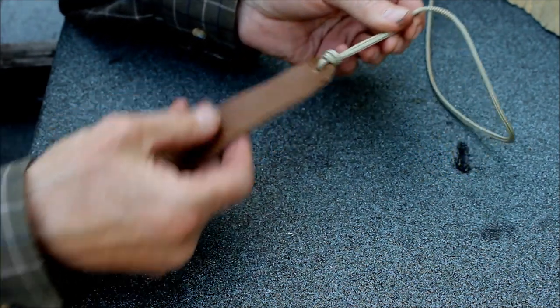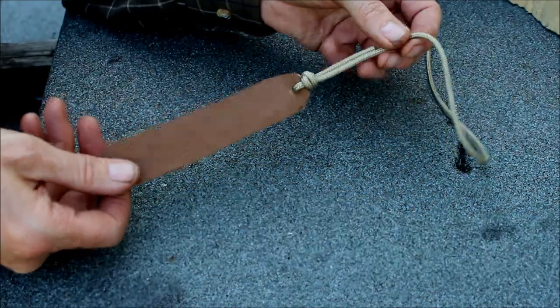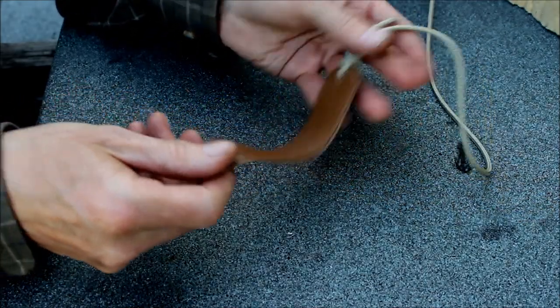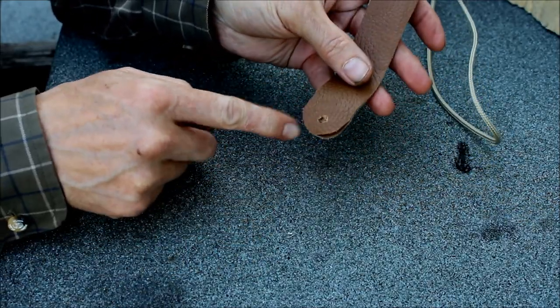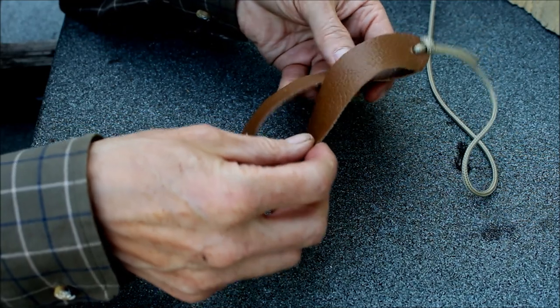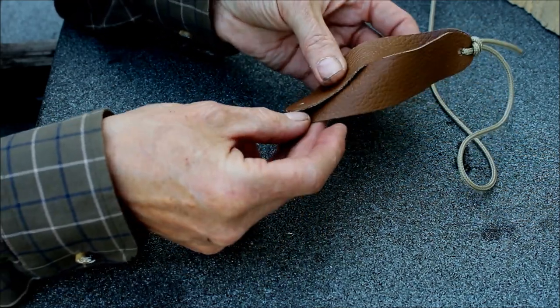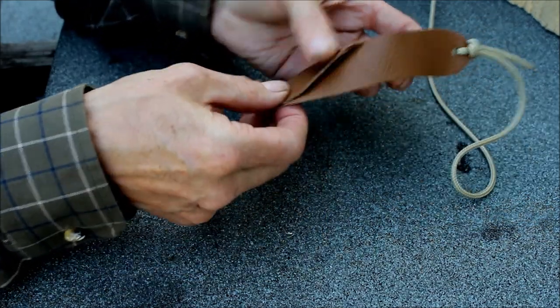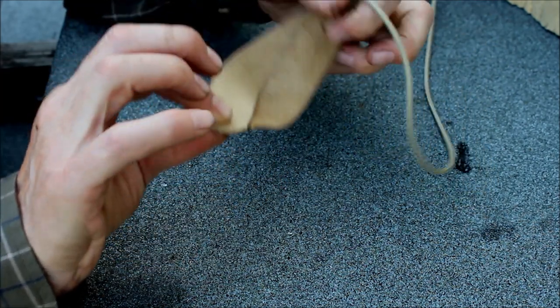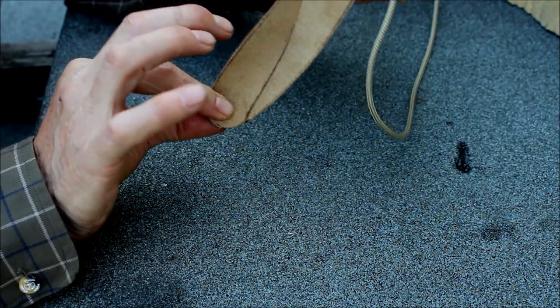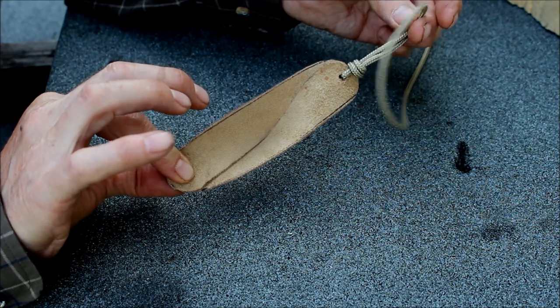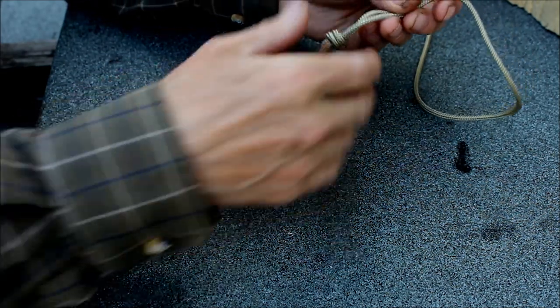So this is a knot that'll cinch up and it will get tight. That's the knot I chose to tie onto the pouch. Obviously then there's another line that goes onto that pouch after you've crossed the two pieces of leather over to make the pouch.